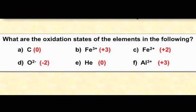So carbon is neutral, so it has an oxidation state of zero. Fe3+ is just plus three. Fe2+ is just plus two. The thing to notice here is that when you write an ion like Fe3+, we write three plus. If we're assigning an oxidation state then it's the other way around, it's plus three. So again O2- that's minus two. Helium is neutral He, so it has an oxidation state of zero. Aluminium, this aluminium three plus has an oxidation state of plus three.